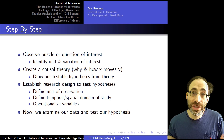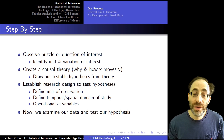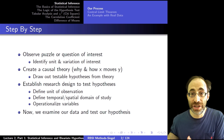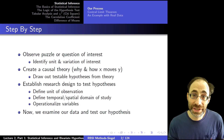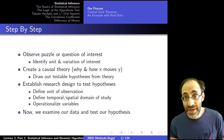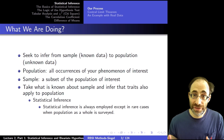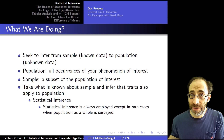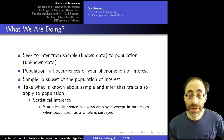Once we have hypotheses, we establish research designs to test them. We define units of observation, temporal and spatial domains of the study, and we operationalize our variables. In the first part we were looking at theoretical units and theoretical variation; now we're looking at the actual concrete variation in our data and how to measure our theoretical concepts. Once we've done that, we examine our data and test our hypotheses. The goal of the testing and data gathering is to infer from some sample to a larger population of interest.